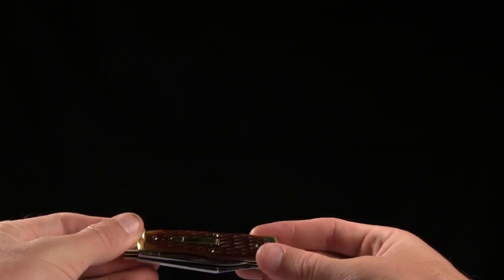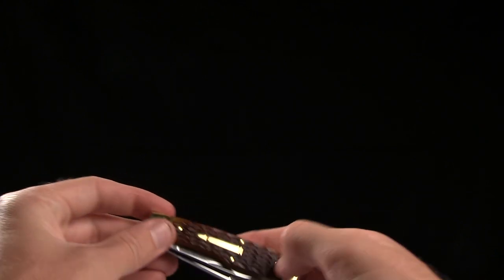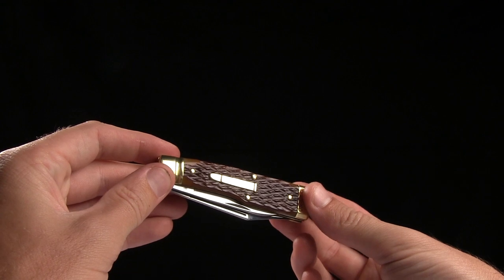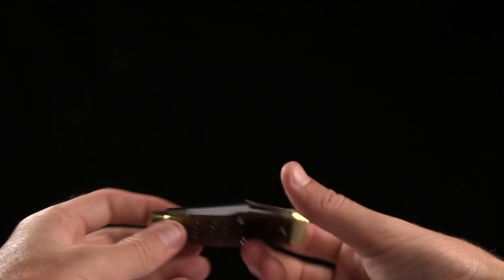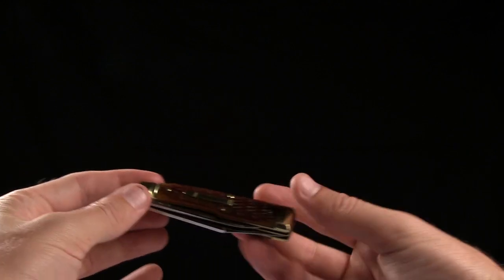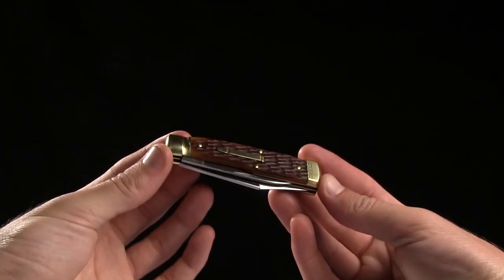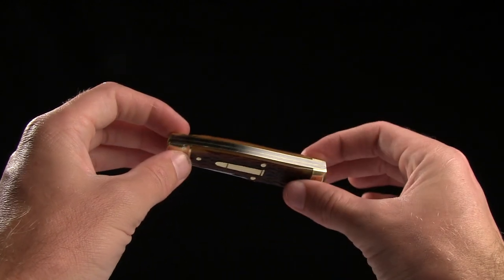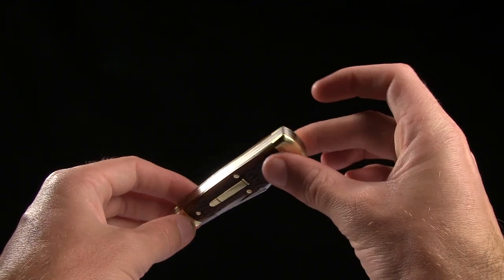This one has brass bolsters and a brass inlaid bullet right there on the scale. So really cool looking. Maybe not my favorite from GEC, but it definitely lives up to their quality of manufacture.